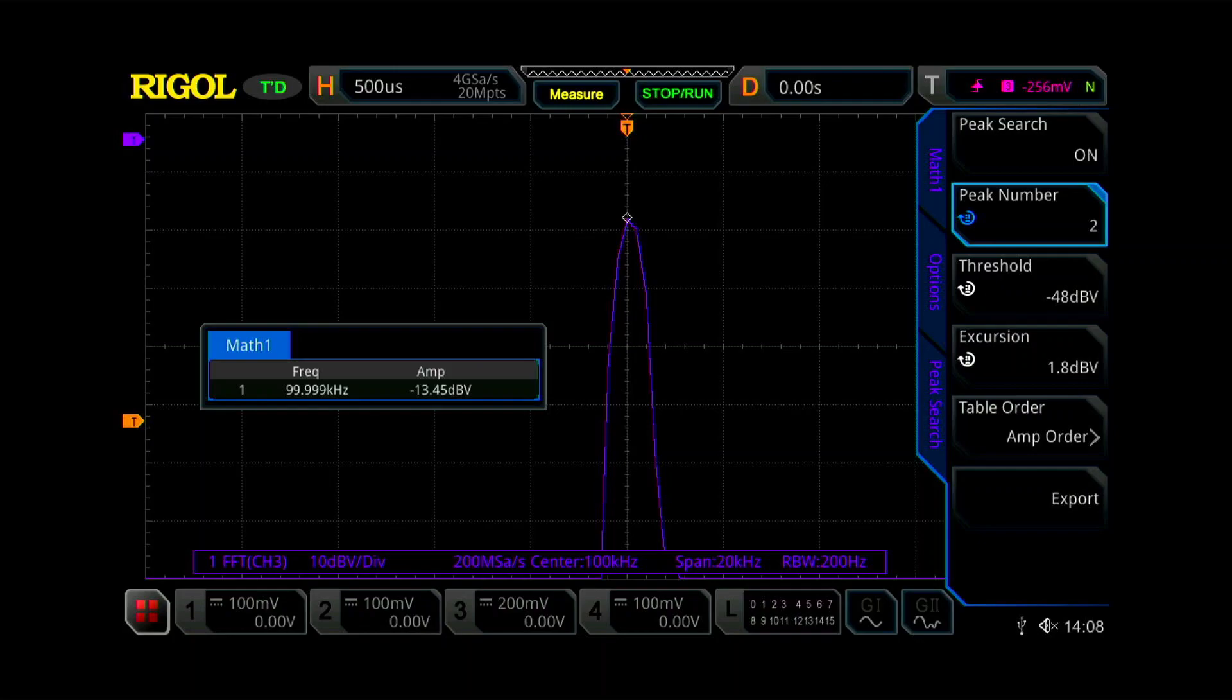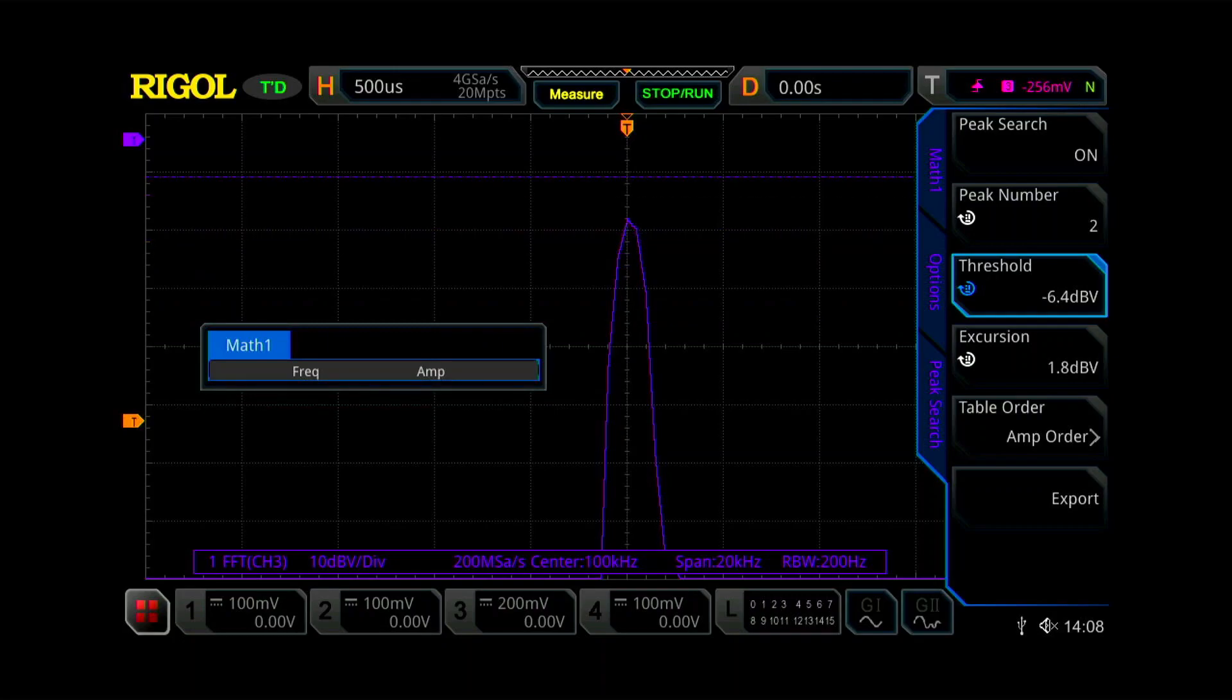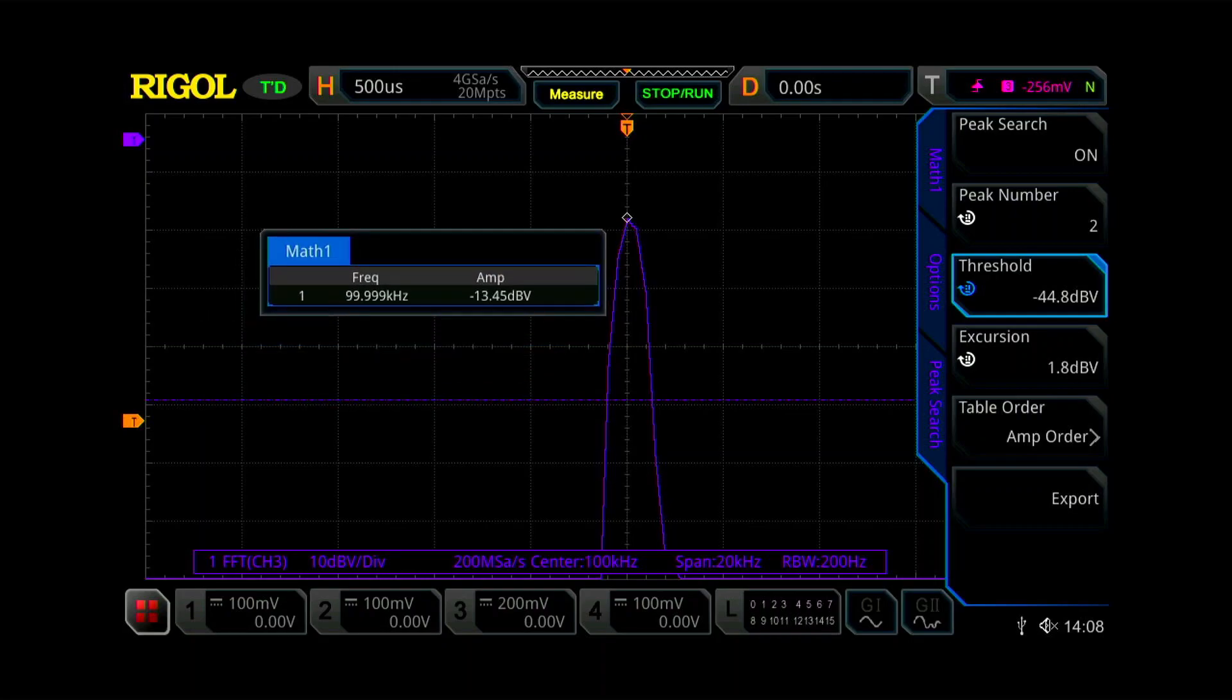We'll turn peak search on and it's not doing much. Let's see here. It's giving us one thing. Then you can hit the threshold. So if you hit threshold, you can turn. If I go above the peak, you can see it's not catching anything. And if I go below the peak, it's now catching a number. So there's a number. So it's measuring the actual peak and it's measuring our peak at minus 13.45. So let's write that down.